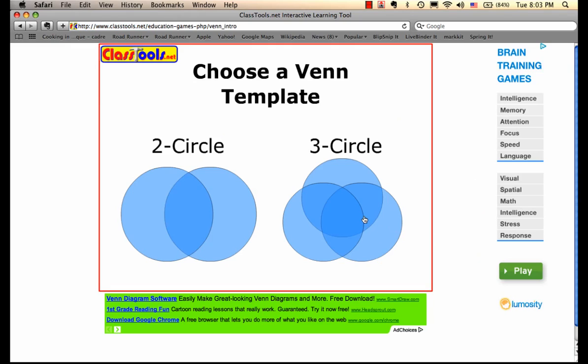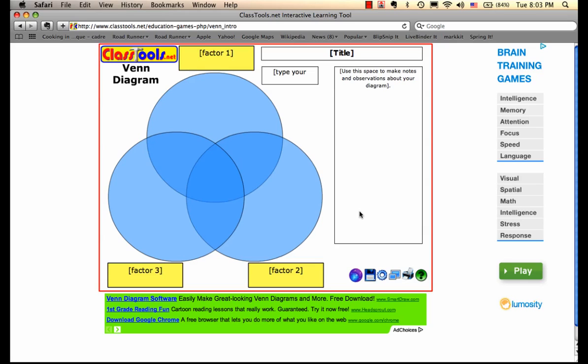For this activity, you will choose the three-circle Venn. The title would be something along the lines of street food comparison.